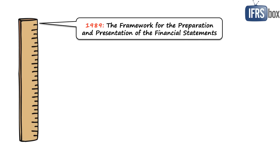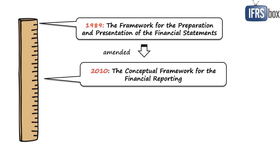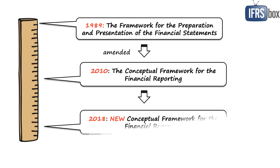In 1989 the framework for the preparation and presentation of the financial statements was issued, but then the International Accounting Standards Board made amendments to it and the new, although unfinished, framework was issued in September 2010 with the new name the Conceptual Framework for Financial Reporting. It stayed in progress for many years, and then in March 2018 the final version was issued with everything completed.